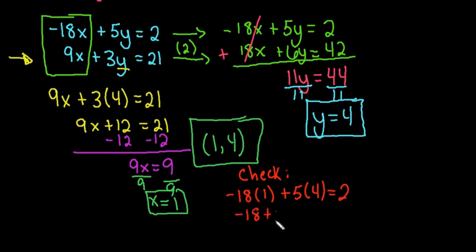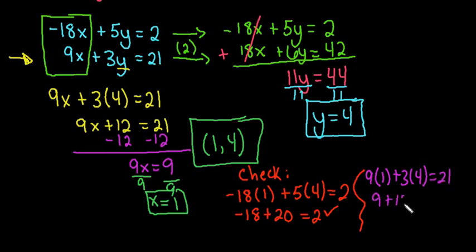So if I look at this, I end up with negative 18 plus 20 equals 2, and we can see that that is true. 20 minus 18 is indeed 2, so the first one works. We want to check both of them. So to check the other one, I would simply plug in the 1 for x and the 4 for y. And we see if this one works, and it does, because 9 plus 12 is also 21. So we can see clearly that our answer makes sense.